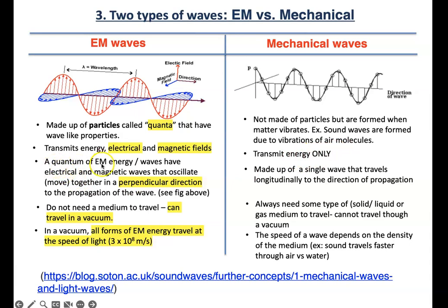A quantum of electromagnetic waves have electrical and magnetic waves that oscillate or move together in a perpendicular direction to the propagation of the wave as shown over here. For these, it's only made out of a single wave that travels longitudinally to the direction of propagation. And electromagnetic waves, because they are made out of energy and particles, they don't need a medium to travel. They can travel in a vacuum. This is very important.